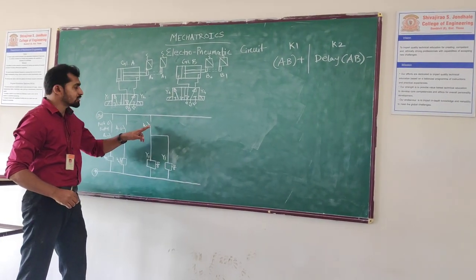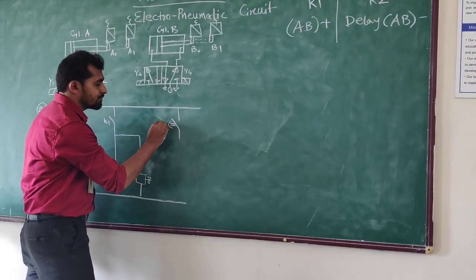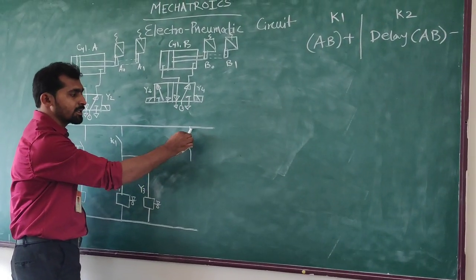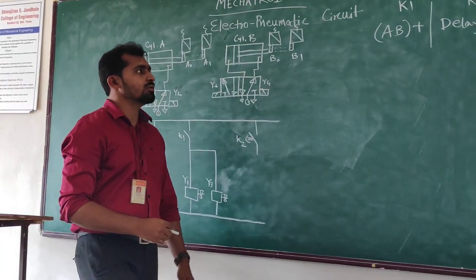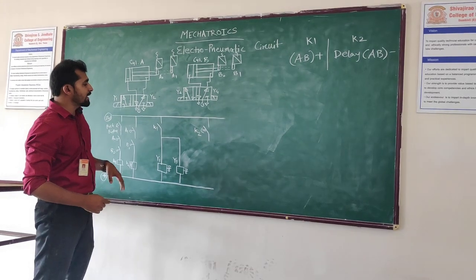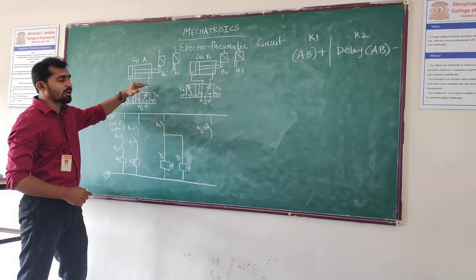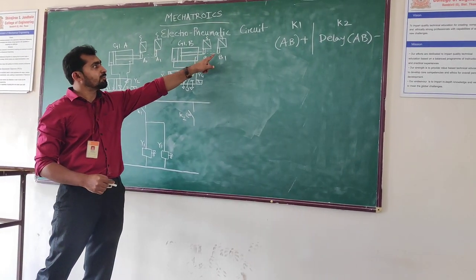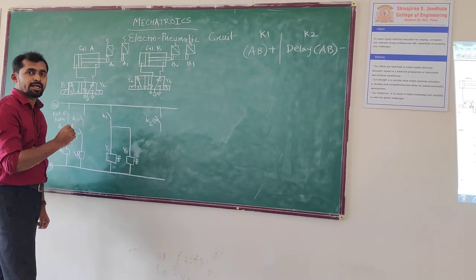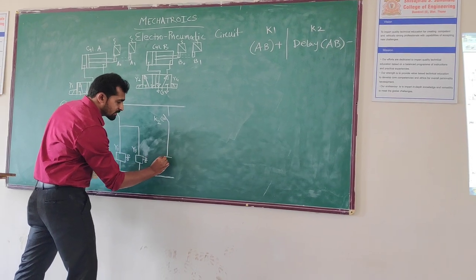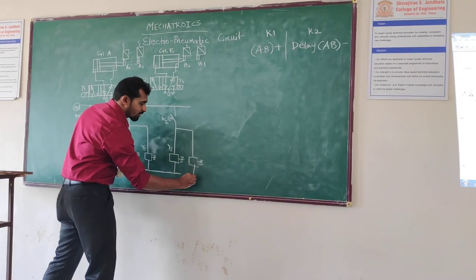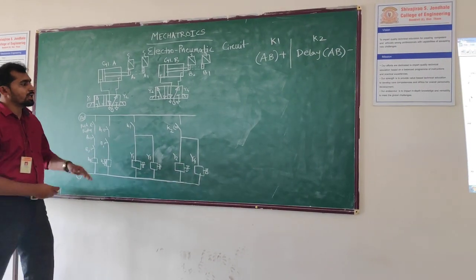Same way as K1, draw the symbol of K2. These circuits are all in normally open condition. If normally closed, the symbol changes accordingly. The electrical signal passes through this line. By using K2 you perform the sequence AB−. AB− means you move the piston rod of cylinder A and cylinder B to the backward direction. To move cylinder A's piston rod backward, actuate Y2. At the same time actuate Y4 because the sequence is delay AB− — both cylinders move backward simultaneously. Draw solenoid Y2 and parallel to it Y4. This completes the electro-pneumatic circuit.